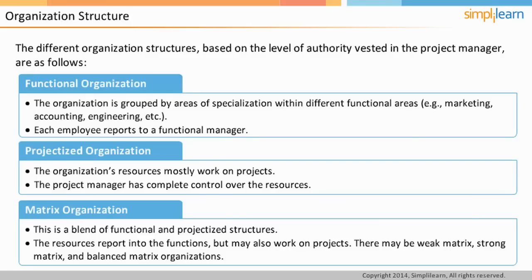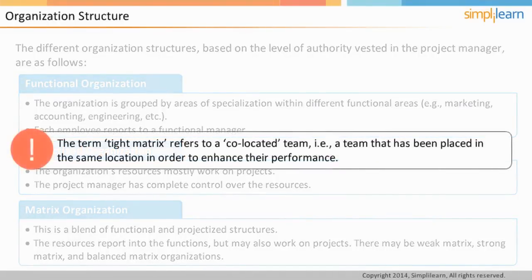Out of the two bosses that team members have in a matrix organization, if the project manager has more authority over the team member, such organizations are called strong matrix. Where the functional manager has more authority, it's a weak matrix organization. If they both share equal authority, then it is a balanced organization. There is another term you might find in the exam called tight matrix, which generally refers to a co-located team placed in the same location to enhance their performance. In the PMP exam, if there is no mention of the organization type, you can assume it to be a matrix organization.